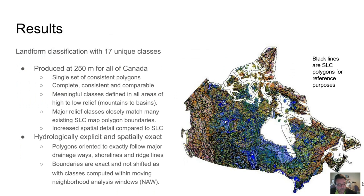Our primary result is production of a landform classification for Canada that has only 17 unique classes. This classification is complete, consistent, comparable everywhere, spatially detailed, and interpretable, and it follows major local hydrological and topographical features explicitly and exactly. In addition to the highly specific local detail, the overall general pattern of the classification agrees well with many of the existing 1 to 1 million scale SLC polygon boundaries, as illustrated here.